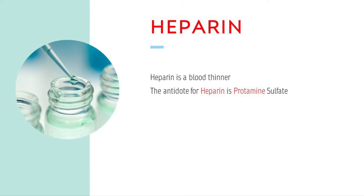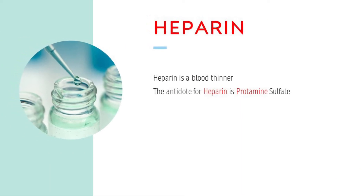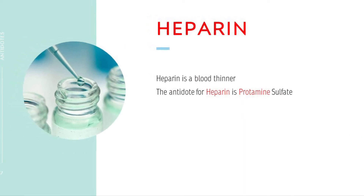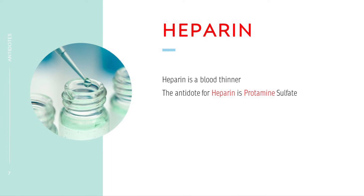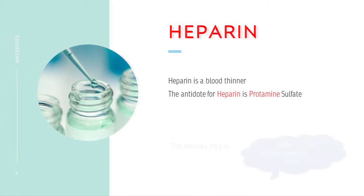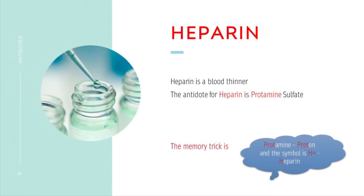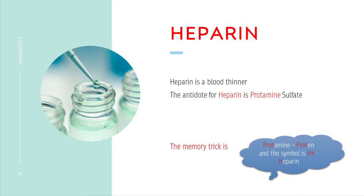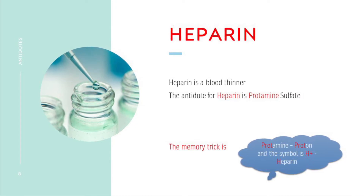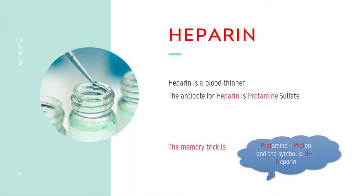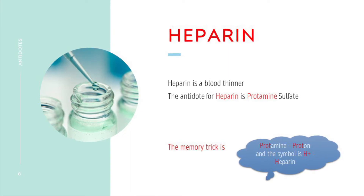Heparin is a blood thinner. The antidote for heparin is protamine sulfate. Protamine sounds like proton, and the symbol of proton is H — and heparin also starts with the letter H.